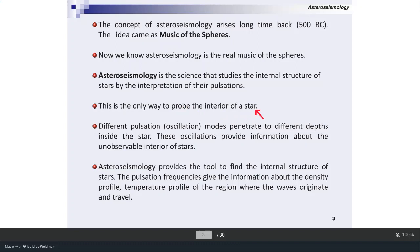Astro-Seismology is the only way to probe inside a star. Different pulsation modes penetrate to different depths inside the star, so we can investigate different depths — all the way from the surface to the core. Astro-Seismology provides a tool to find the internal structure of the star. The pulsation frequencies give information about the density profiles, temperature profiles, and regions where there is no other way of studying the internal structure.